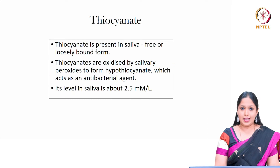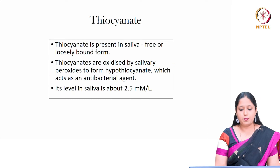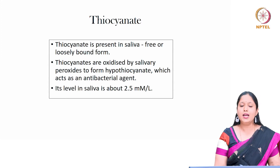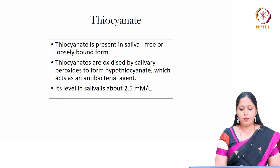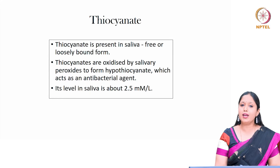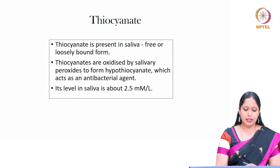The next component is thiocyanate. Thiocyanate is present in saliva either in the free form or in the loosely bound form. Thiocyanates are oxidized by salivary peroxidase to form hypothiocyanate, which acts as an antibacterial agent. Its level in saliva is 2.5 millimoles per liter.